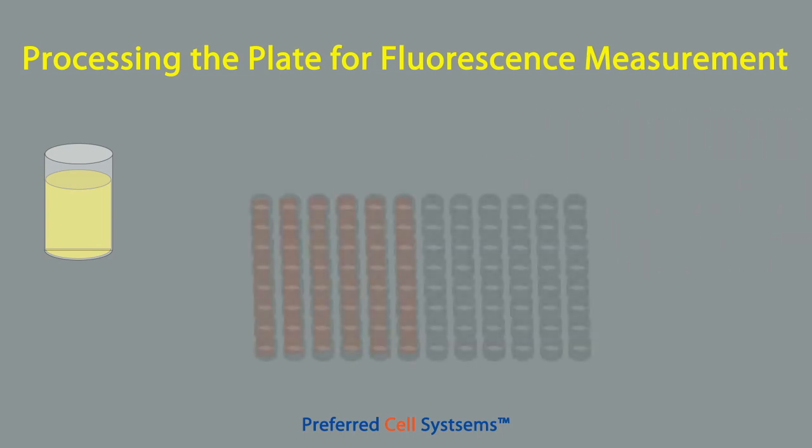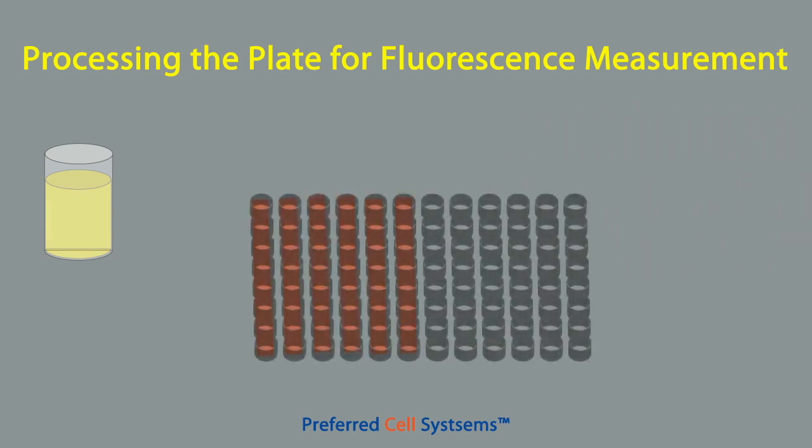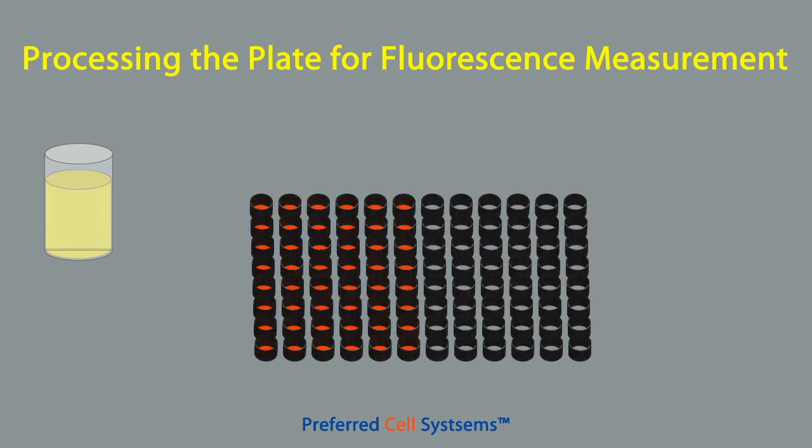Remove the 96-well plate from the incubator and let it come to room temperature. We are using only six columns of the 96-well plate. The plate will now be covered with the sterile adhesive foil that was included with the kit, so that the unused wells will remain sterile for later use.